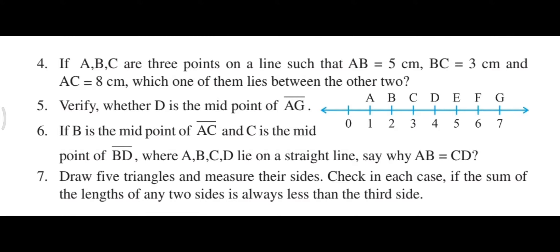This is question number 4. If A, B, C are 3 points on a line such that AB is equal to 5 cm, BC is equal to 3 cm, and AC is equal to 8 cm, then which one of the following lies between the two other points? So let us find out.